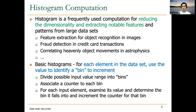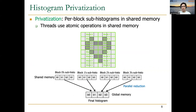The next parallel pattern was histogram computation, which is an operation that is frequently used for reducing the dimensionality of data and extracting notable features. In histogram calculation, what we typically do is reading input elements one by one and incrementing counters or bins in the histogram. The problem is that when we have multiple threads updating the histogram, we will need to use atomic operations for the correct result, and the atomic operations serialize the execution. One way to alleviate this serialization is called privatization, which consists of placing multiple sub-histograms in the shared memory. Each of them is going to be created by a different thread block, and when all sub-histograms are done, they will be merged into a final histogram.